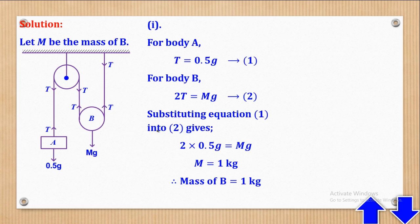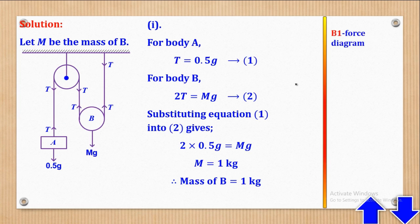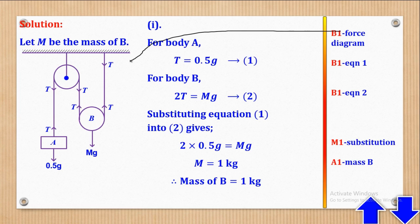Before we go to Roman 2, let's see how marks are awarded for Roman 1: B1 for the correct force diagram, B1 for equation 1, B1 for equation 2, M1 for substitution, and A1 for the value of M.